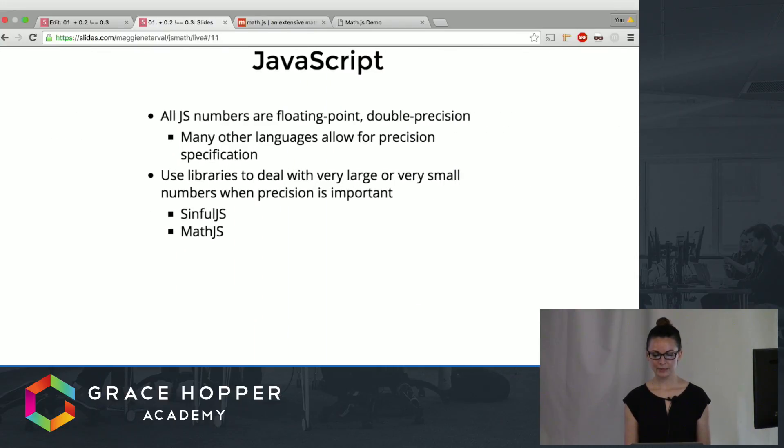So in JavaScript you don't have much say in how your numbers are stored. They are all floating point double precision whereas other languages, if you've worked with floats or halves or doubles or longs, you can specify how much information you need to be stored about a given number.